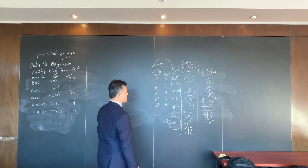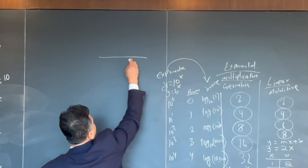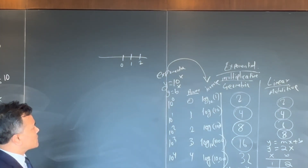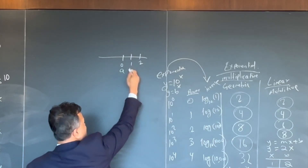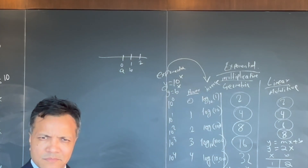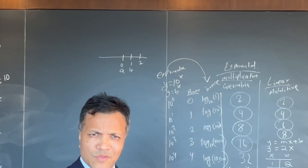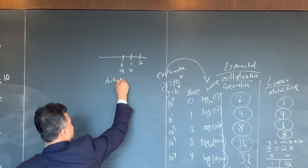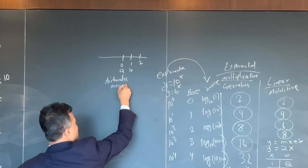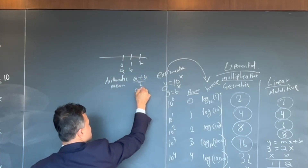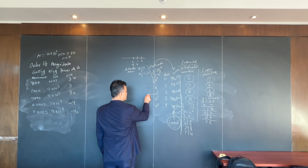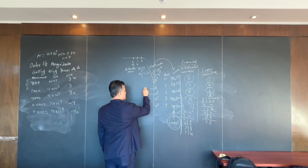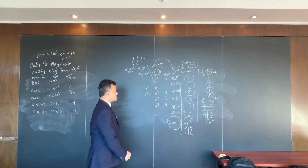If I give you a number line with 0 and 1, the arithmetic mean of two consecutive numbers — A plus B over 2 — gives 0 plus 1 over 2. Now on a logarithmic scale, the two consecutive numbers are 10 raised to N and 10 raised to N plus 1. For these we use the geometric mean.